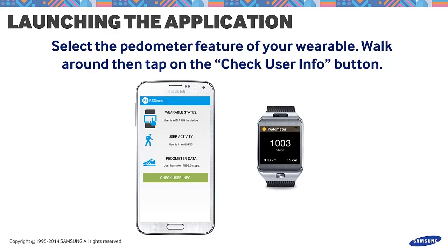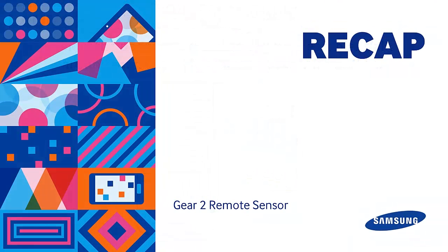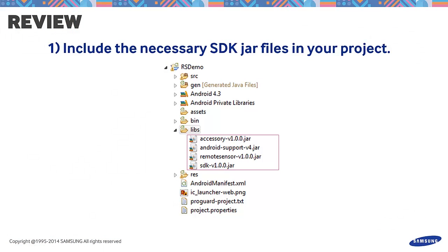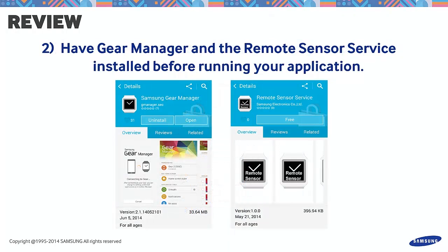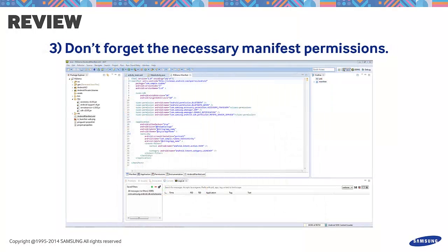Isn't it amazing? Let's sum up the things we discussed to develop the application using Samsung Remote Sensor. Include the necessary SDK JAR files in your project. Have GearManager and the Remote Sensor service installed before running your application. And don't forget the necessary manifest permissions. We hope this tutorial helped. For inquiries, please post your questions on the official forum at developer.samsung.com. Thank you.